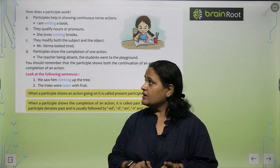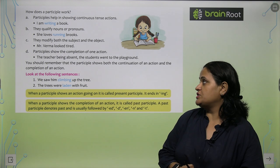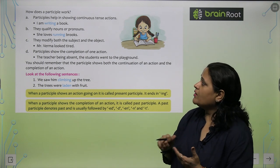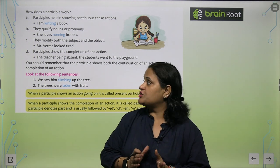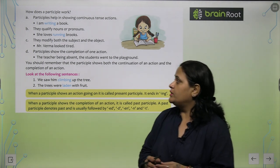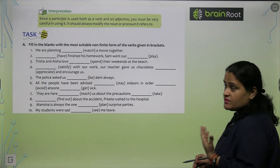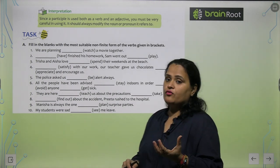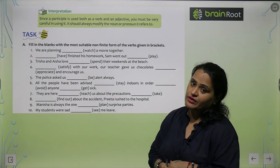A participle is a form of verb which also works as an adjective. Participles help in showing continuous tense action, like I am writing a book. They qualify nouns or pronouns because they also work as adjectives. She loves running brooks. Since a participle is used both as a verb and an adjective, you must be very careful in using it. It should always modify the noun or pronoun it refers to.